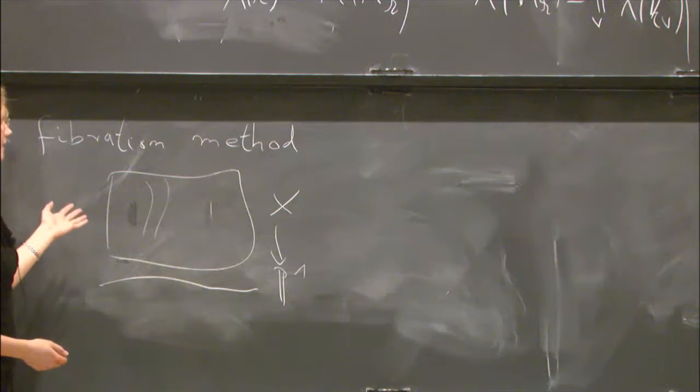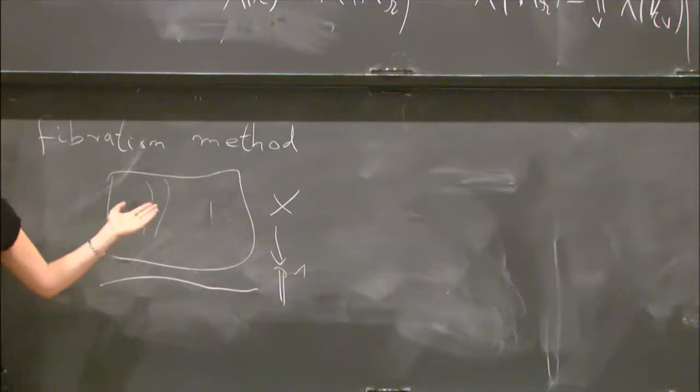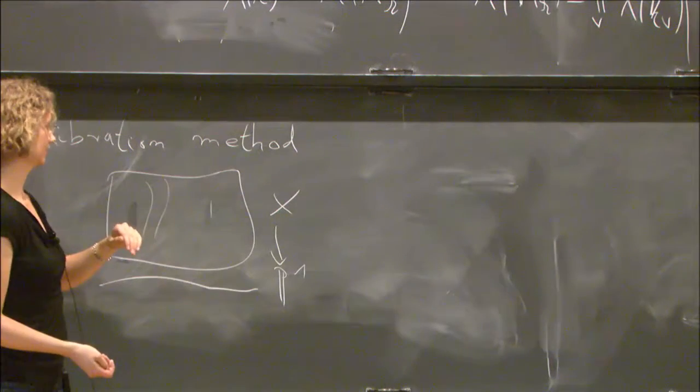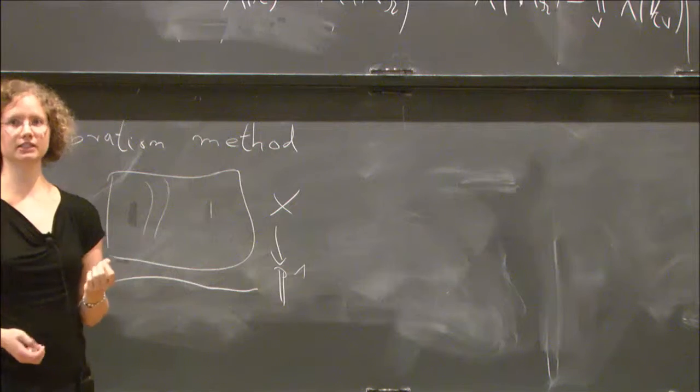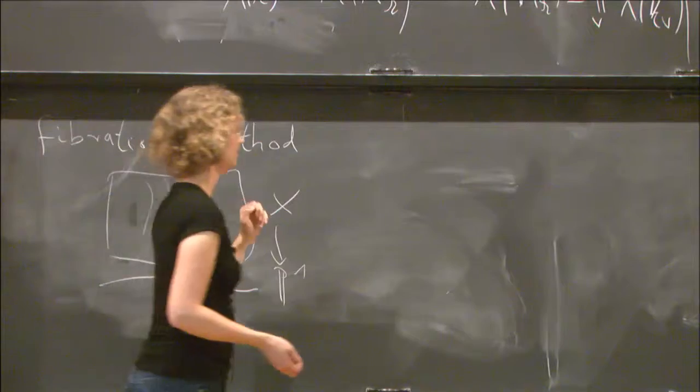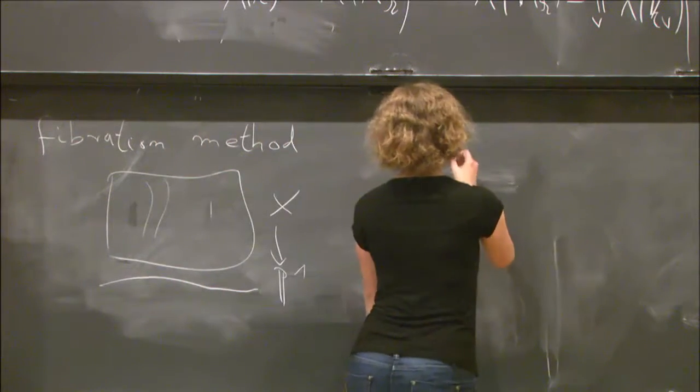Very recently, Harpaz and Wittenberg have made some important progress in that direction. They show that for a nice class of varieties X, if you assume some additional conjectures that they come up with on split values of polynomials, then this process works. Together with Jim Browning...